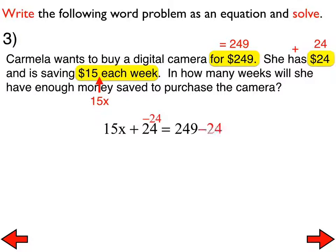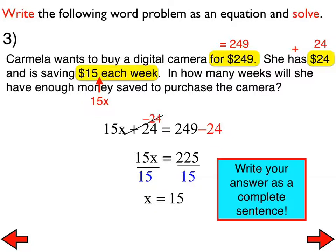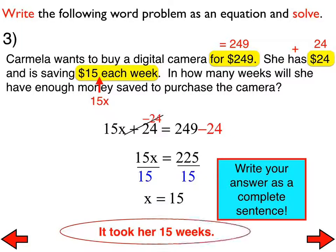There's the equation. Subtract 24 from both sides. We now have 15x equals 225. Divide both sides by 15. We get x equals 15. That does not answer the question. Somebody give me the equation, or not the equation, the sentence that they used for this one. There we go. And my sentence is, it took her 15 weeks, because that's what it's asking for. And how many weeks will she have enough? It took her 15 weeks to have enough. All right, let's take a look at number four. Same thing. Equation and answer. Make sure you answer the problem as a complete sentence or with a complete sentence.